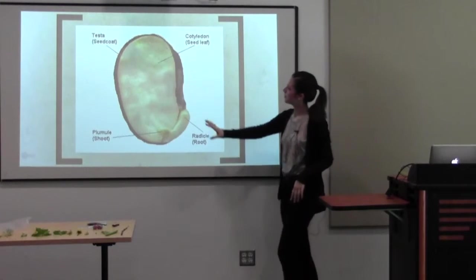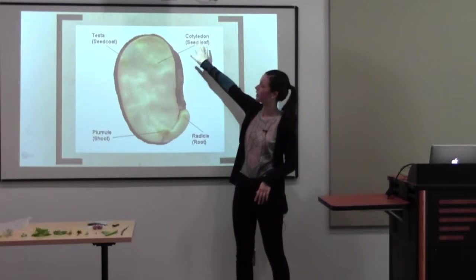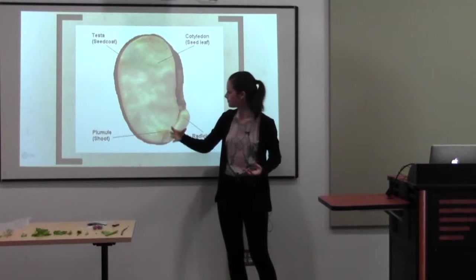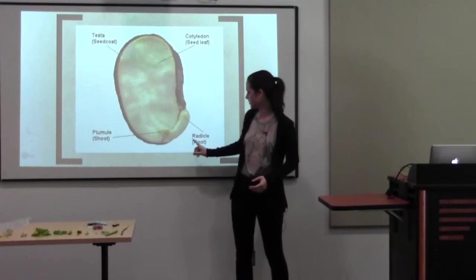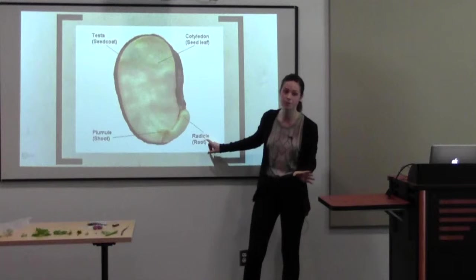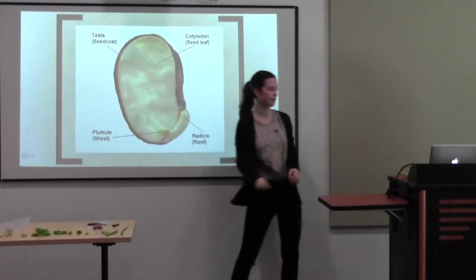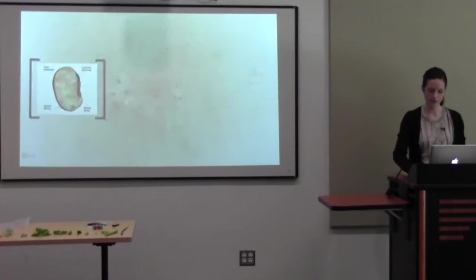On the inside you have this called cotyledon, and that provides a lot of the food for the seed when it first starts to emerge. What's going to emerge first is this root, or its technical term is a radicle. And finally this shoot will come out, and we can see that here in a video.